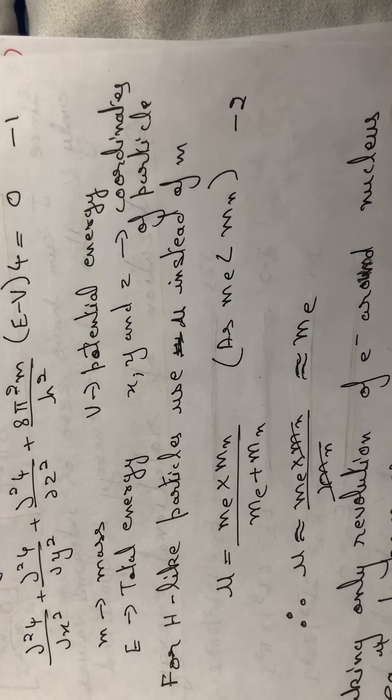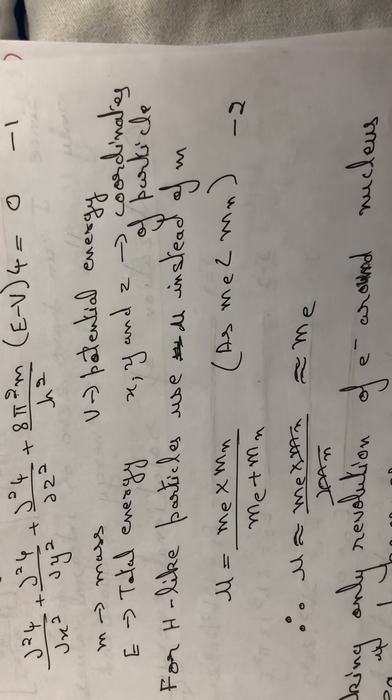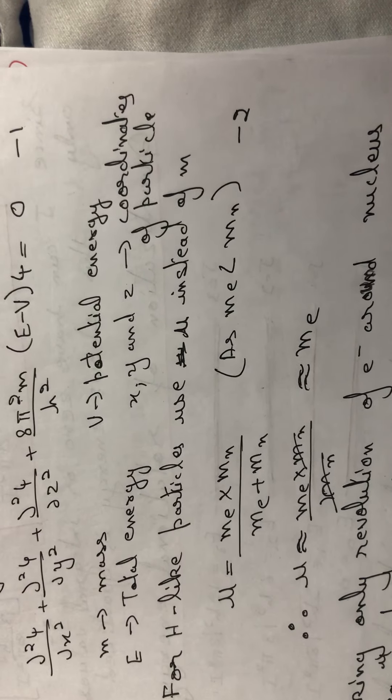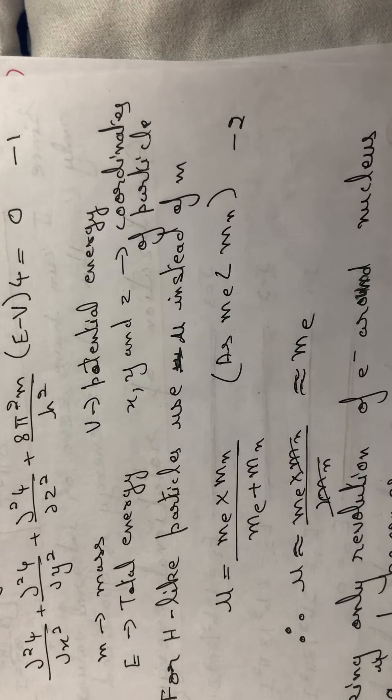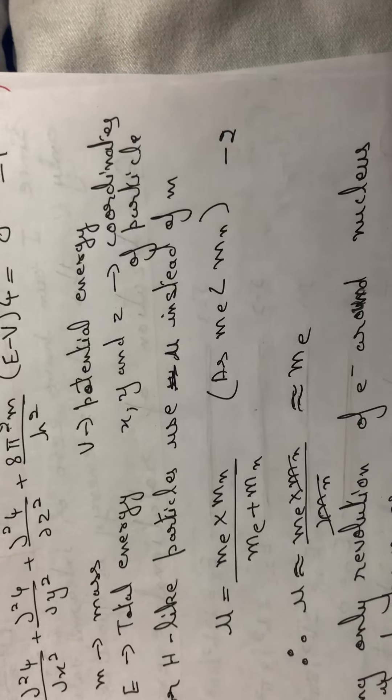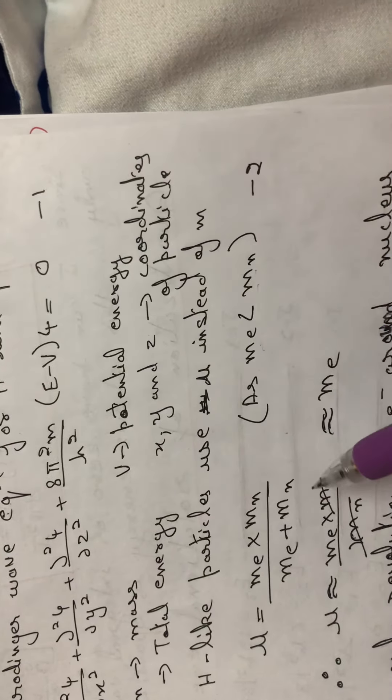Since the mass of the electron is very negligible compared to the mass of the proton and neutrons which constitute the nucleus, mₑ is very much less than mₙ. Therefore mₑ in the denominator can be neglected — we can cancel it — and μ becomes approximately equal to mₑ.